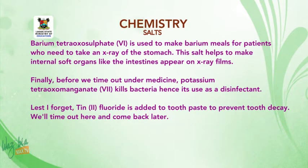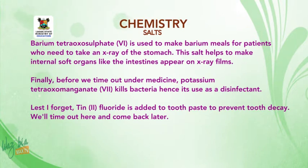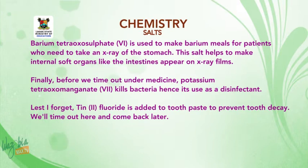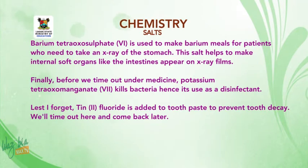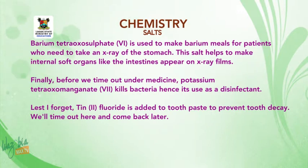Barium tetraoxyl sulfate 6 is used to make barium meals for patients who need to take an x-ray of the stomach. This salt helps to make internal soft organs like the intestines appear on x-ray films. Potassium tetraoxyl manganate 7 kills bacteria, hence it's used as a disinfectant. Tin 2 fluoride is added to toothpaste to prevent tooth decay.